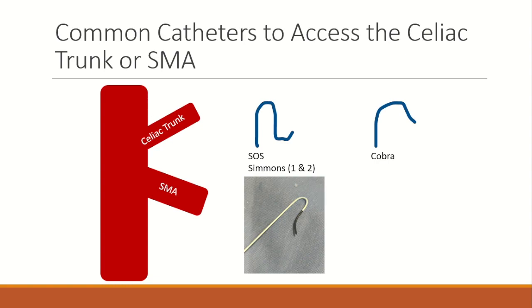In contrast to the celiac trunk, the superior mesenteric artery arises just below the celiac trunk around the L1 vertebral level, in an anterior inferior direction off of the aorta. It can be accessed using the same tools as the celiac artery. It is often good practice to check the superior mesenteric artery along with the celiac artery when figuring out what is supplying a tumor, especially when considering radioembolization of a hepatic tumor.